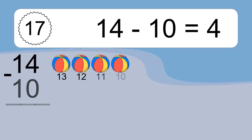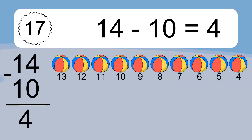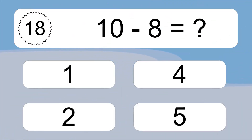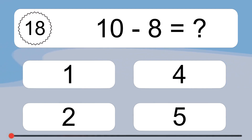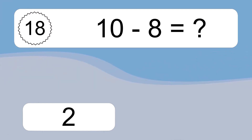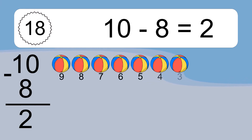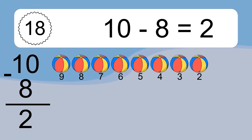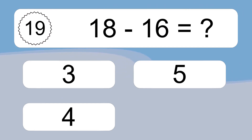14 minus 10 equals 4. Let's count it: 13, 12, 11, 10, 9, 8, 7, 6, 5, 4. 10 minus 8 equals what? 10 minus 8 equals 2. Let's count it: 9, 8, 7, 6, 5, 4, 3, 2.